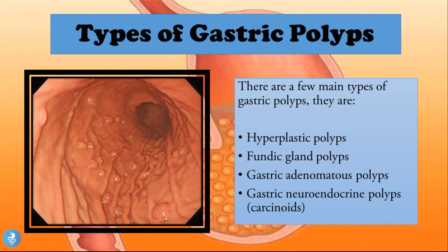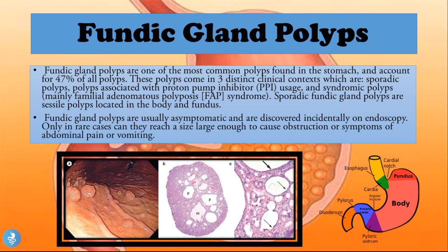There are four main types of gastric polyps: the hyperplastic polyps, the fundic gland polyps, the gastric adenomatous polyps, and the gastric neuroendocrine polyps or carcinoids. Let's start by talking about the fundic gland polyps.